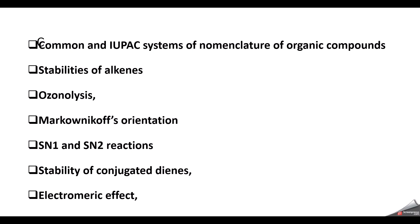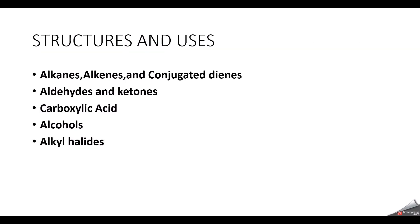SN1 is very important. Next is stability of conjugated dienes — one question expected. Then the Diels-Alder reaction and electromeric effect — these are also important. Structure and uses in pharmaceutical organic chemistry cover alkenes, conjugated dienes, aldehydes, ketones, carboxylic acid, alcohols, and alkyl halides — used in structure identification and compound naming.